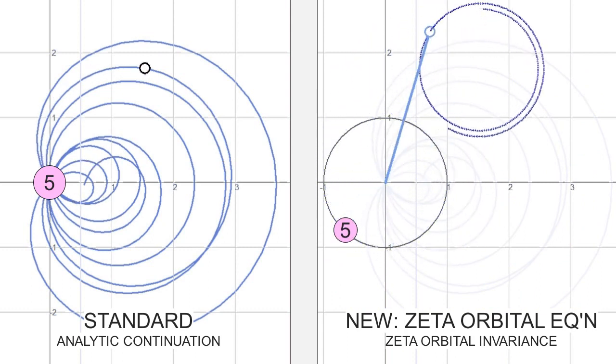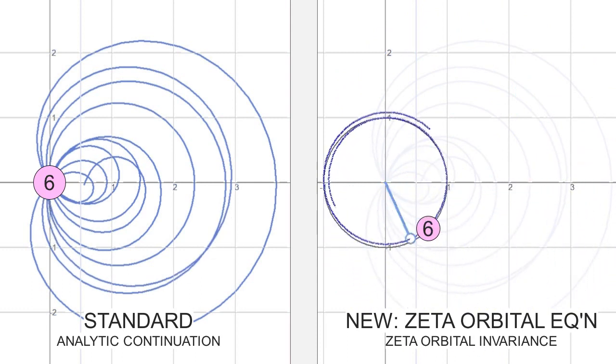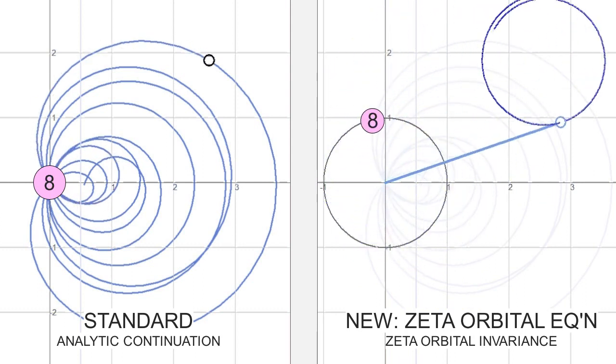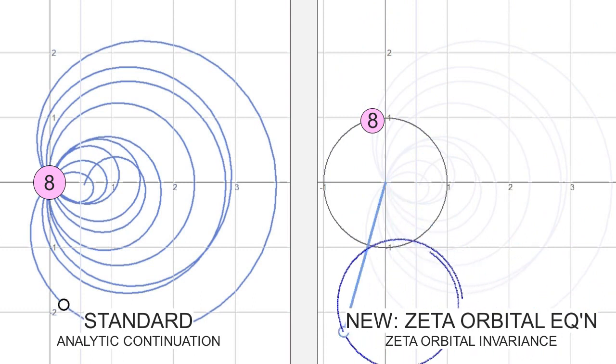Unlike analytic continuation, which coerces zeros from an erratic function in non-convergent regions, the ZOE quietly explores the intrinsic nature of these zeros, undisturbed by the function's complex behavior.